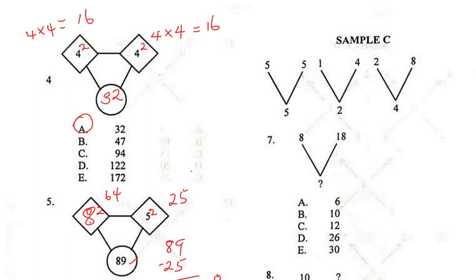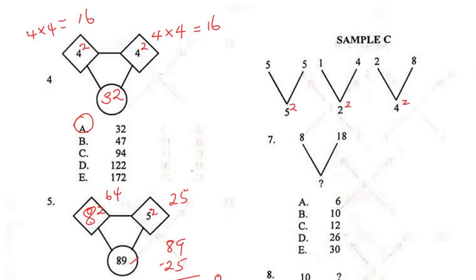Now we have a different pattern — Sample C. Looking at the base digits: 5² = 25, and on top we have 1 × 4 — wait, 5 × 5 = 25 must rhyme with what's on top. Then 2² = 4, and 1 × 4 = 4; and 4² = 16, and 2 × 8 = 16. So the pattern is: square the base number, and that product must equal the top pair multiplied.